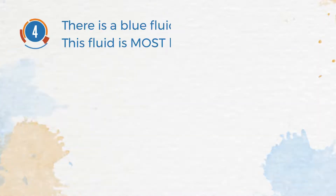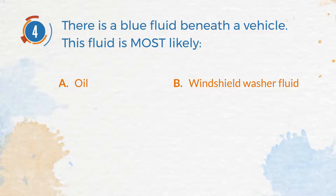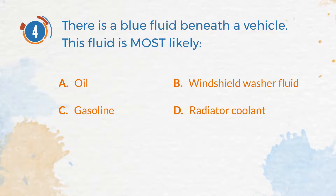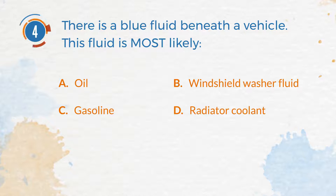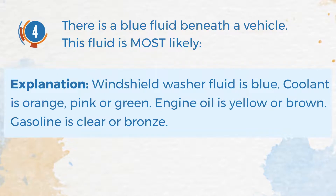Number 4. There is a blue fluid beneath a vehicle. This fluid is most likely: A. Oil. B. Windshield washer fluid. C. Gasoline. D. Radiator coolant. The correct answer is B. Windshield washer fluid. Explanation: Windshield washer fluid is blue. Coolant is orange, pink, or green. Engine oil is yellow or brown. Gasoline is clear or bronze.